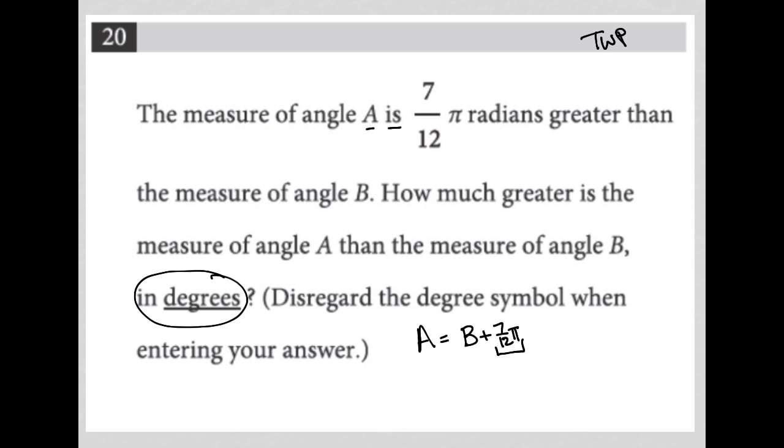So what we're really focusing on is how do I convert this radian measurement into degrees? How do I go from radians to degrees? The most important thing to know here is that π radians is equivalent to 180 degrees.